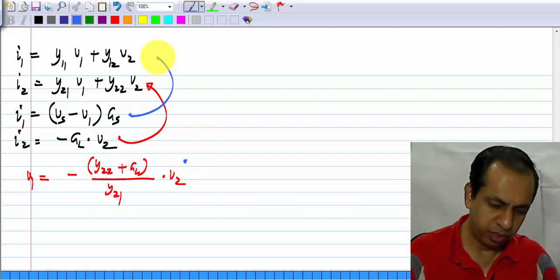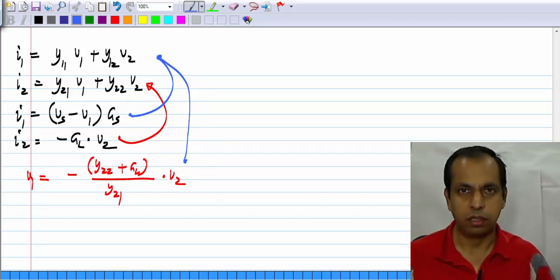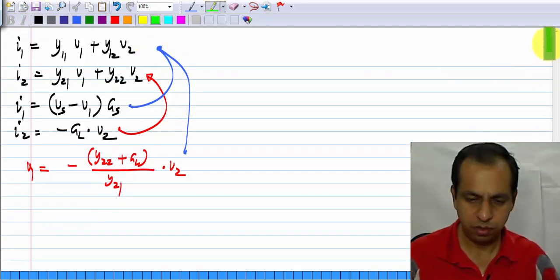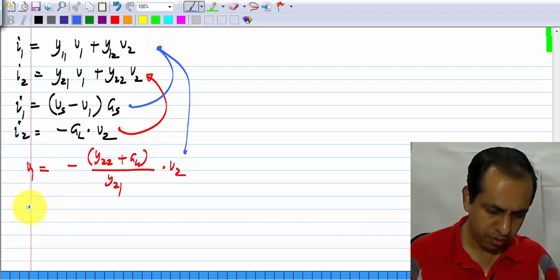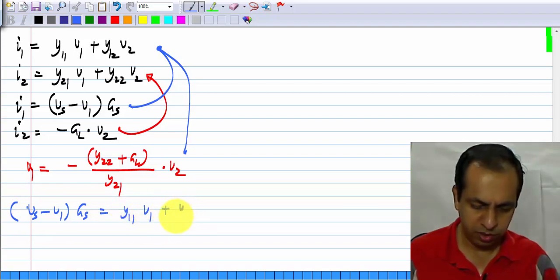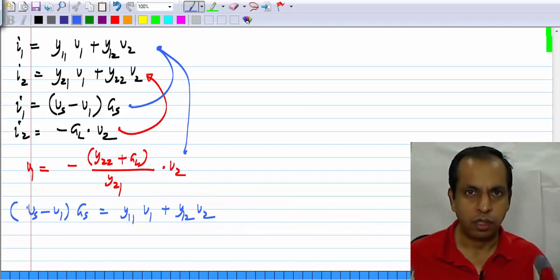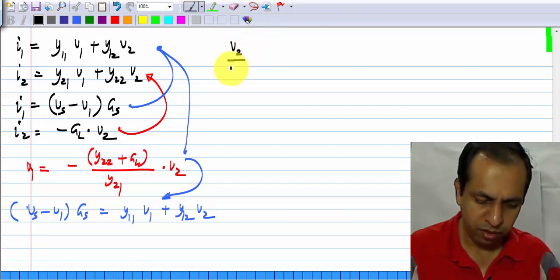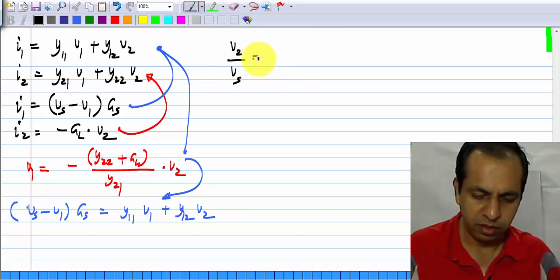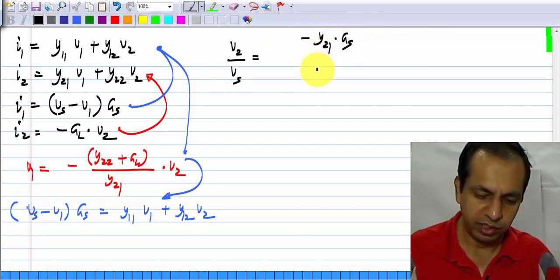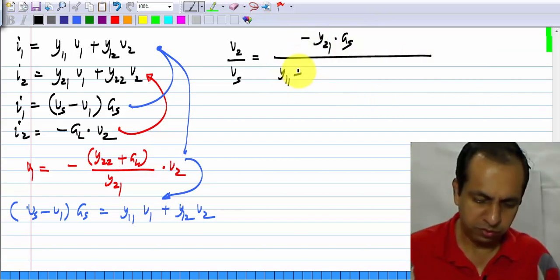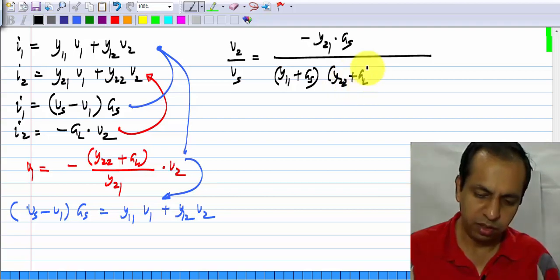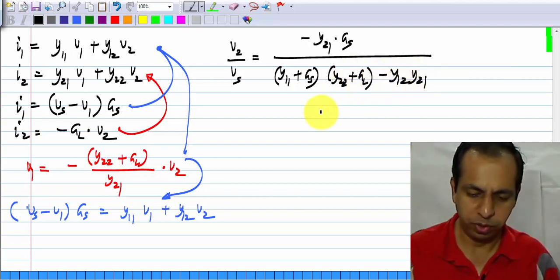We can take this one, we can take this one and this one and put it in here. When we substitute this into that, we will get Vs minus V1 times Gs equals Y11 V1 plus Y12 V2, and we can substitute this one and substitute this one into this to completely eliminate V1. And if you obtain the final expression, you will see that V2 by Vs will be equal to minus Y21 Gs divided by Y11 plus Gs times Y22 plus GL minus Y12 Y21.